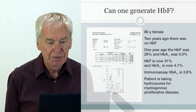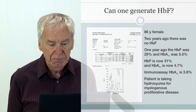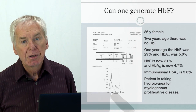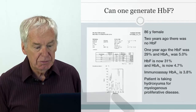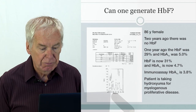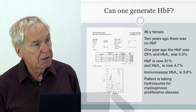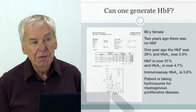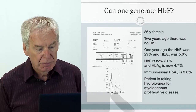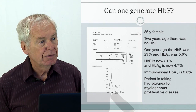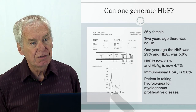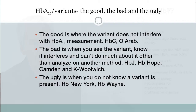Can we generate hemoglobin F in adults? The answer is yes. An 86-year-old female had an A1c performed two years ago with no hemoglobin F. A year later, hemoglobin F was 29% and A1c was 5.0%. Now hemoglobin F has risen to 31% and A1c is 4.7% — whereas on immunoassay it was only 3.8%. How can an 86-year-old generate hemoglobin F? She was taking hydroxyurea, which increases the production of hemoglobin F and is often used as an adjunct in chemotherapy.